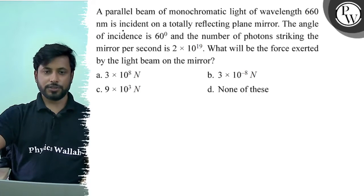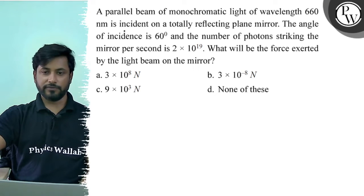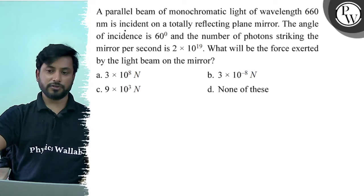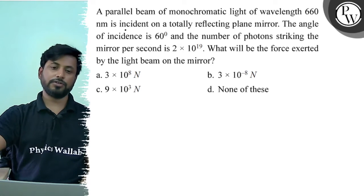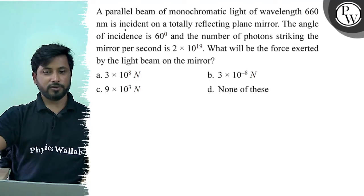Hello, let us see this question. A parallel beam of monochromatic light of wavelength 660 nanometers is incident on a totally reflecting plane mirror. The angle of incidence is 60 degrees and the number of photons striking the mirror per second is 2×10^19. What will be the force exerted by the light beam on the mirror?